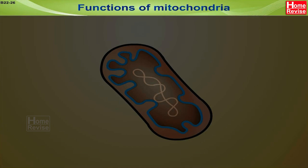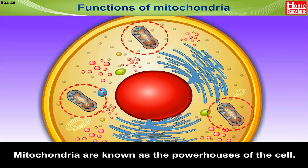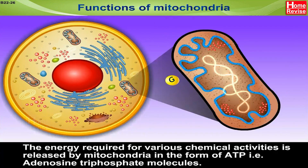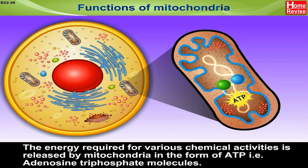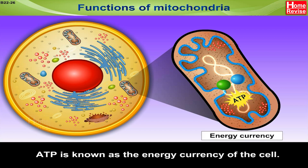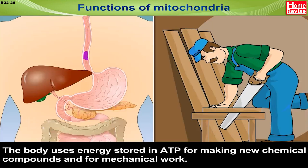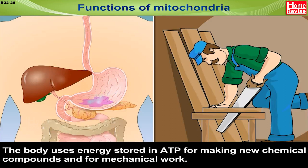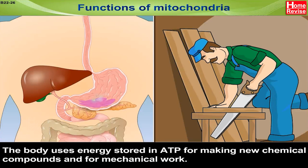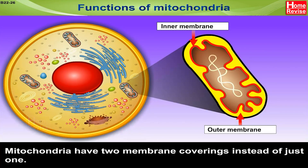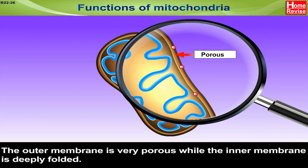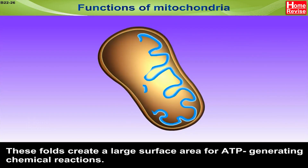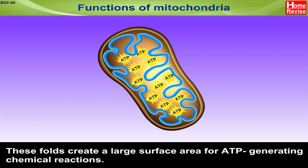Functions of Mitochondria. Mitochondria are known as the powerhouses of the cell. The energy required for various chemical activities is released by mitochondria in the form of ATP — that is adenosine triphosphate molecules. ATP is known as the energy currency of the cell. The body uses energy stored in ATP for making new chemical compounds and for mechanical work. Mitochondria have two membrane coverings — the outer membrane is very porous and the inner membrane is deeply folded. These folds create a large surface area for ATP-generating chemical reactions.